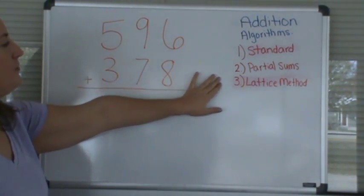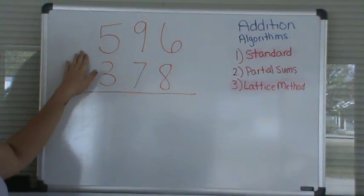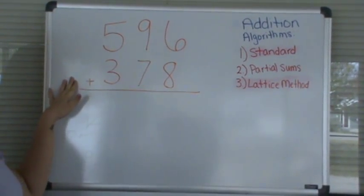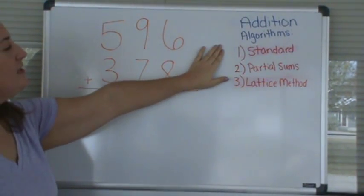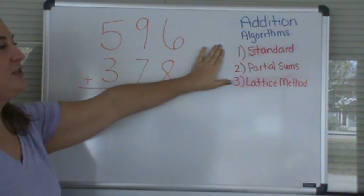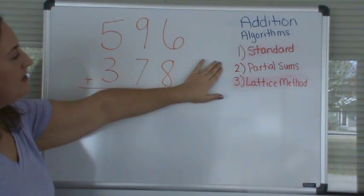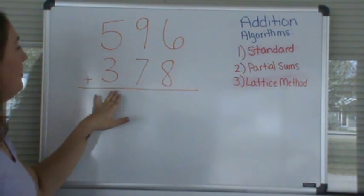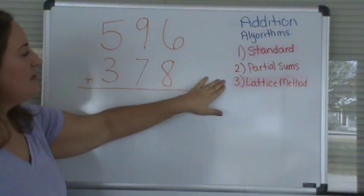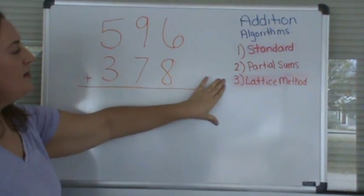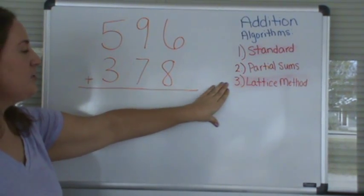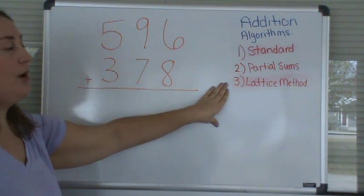Today I'm going to be teaching you three different methods that can be used to add 596 plus 378. The first method is the standard algorithm that we use in the United States. The next method is the partial sums method where we add by place value. And the next method is the lattice method. This seems a little complicated, but it's actually quite easy once you know how to set up the problem.